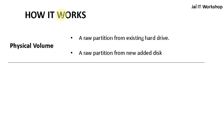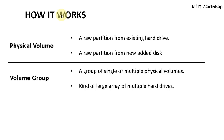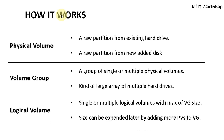This raw partition can be from your existing hard drive or from a newly added hard drive. The second step is the Volume Group. Once you have created one or multiple physical volumes, you need to create a volume group — a group of single or multiple physical volumes clubbed together. The third step is creating logical volumes. These are the volumes where you create a file system and put your data. On a higher capacity volume group you can create multiple logical volumes or a single large logical volume according to your requirement.